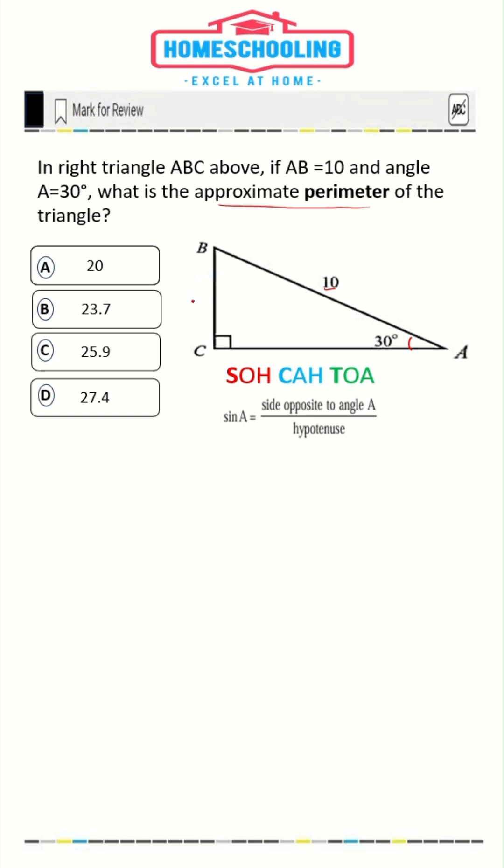To find the perimeter, we need to know the value of the other two sides, BC and AC. In the question, the hypotenuse is already given.